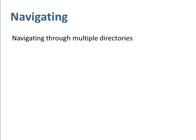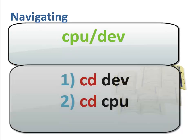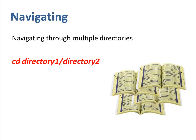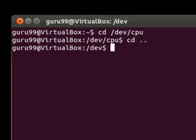You can navigate through multiple directories at the same time by specifying its complete path. So if you want to move to the cpu directory under dev, you do not need to break this operation in two parts. Here, by using a single command, we would move from the home directory to the cpu directory under dev. In case you want to move up one directory, you can easily do so by trying cd space dot dot. By using this command, we would move from the cpu directory to the dev directory, then again using the same command, we would move from dev directory to the root directory.